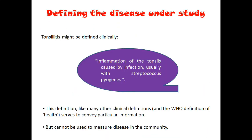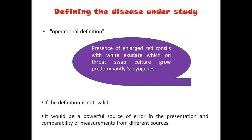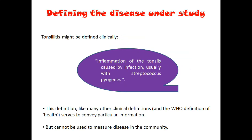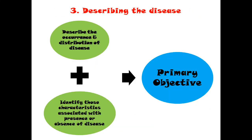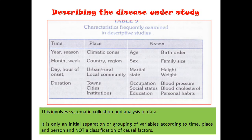The second part of the third step is place distribution — describing the disease under place. There will be various variations: international, national, rural-urban, and local. The third part of the third step is describing the disease under person, based on age, sex, occupation, marital status, and so on.